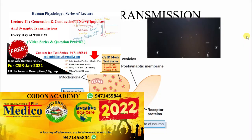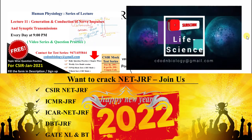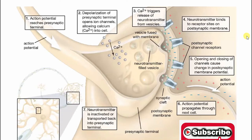Good morning everyone. Let's start with today's lesson, which is again about synaptic transmission. We discussed synaptic transmission in the previous lesson, and now we'll do a summary. First, we saw that in the axon zone of the first neuron, the signal or stimulus was initiated by the opening of mechanically-gated ion channels, which are opened by pressure.